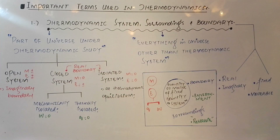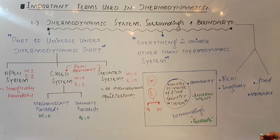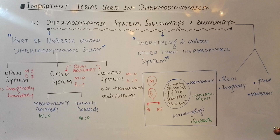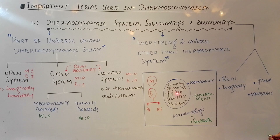This schematic diagram shows that the box represents your universe. The small part of the universe under our consideration, in which we are studying the energy changes, is called our system. A system may also be defined as a quantity of matter of fixed identity which is separated from surroundings by a boundary. The surroundings are the environment or reservoir in which the system is present, and the boundary is the separation between the system and the surroundings.